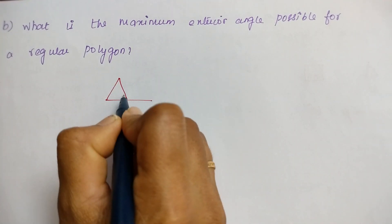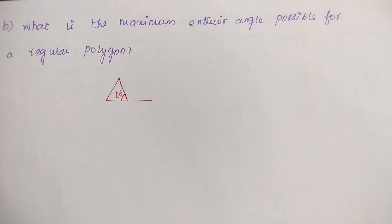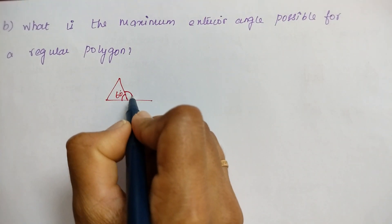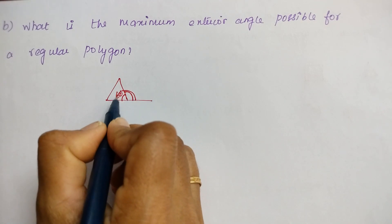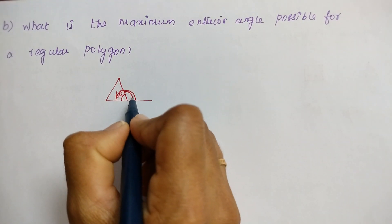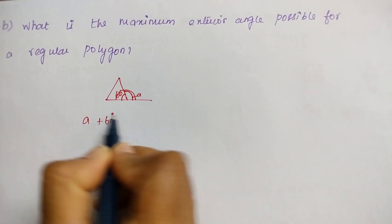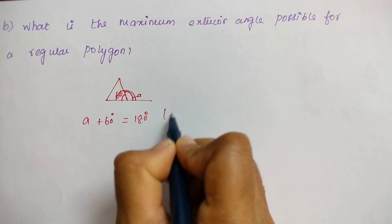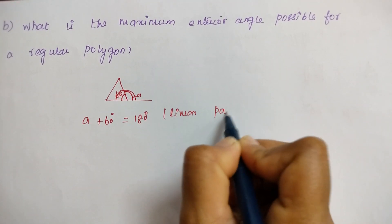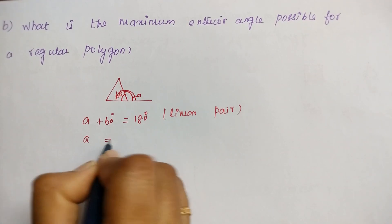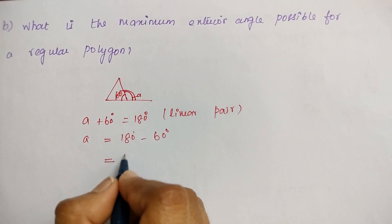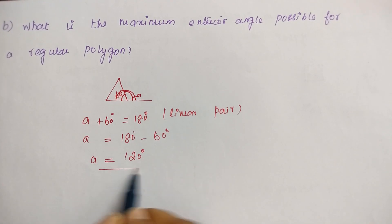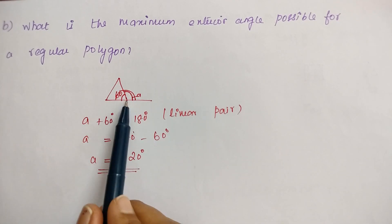We can take the same equilateral triangle. Already we know the interior angle is 60 degrees. Now we have to find the maximum exterior angle. This one is the exterior angle, and these two form a linear pair. Suppose if I take this exterior angle as A, then A plus 60 degrees equals 180 degrees, because these two form a linear pair. So A, the exterior angle, equals 180 minus 60, which is 120 degrees. So the exterior angle is 120 degrees, and this will be the maximum exterior angle possible for a regular polygon.